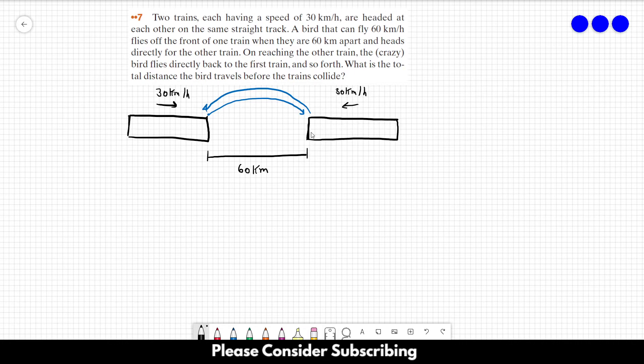So what we can see is that the velocity that the trains are approaching each other is the sum of their velocities. So we can think that one train is still and the other one is moving with the sum of their velocities.